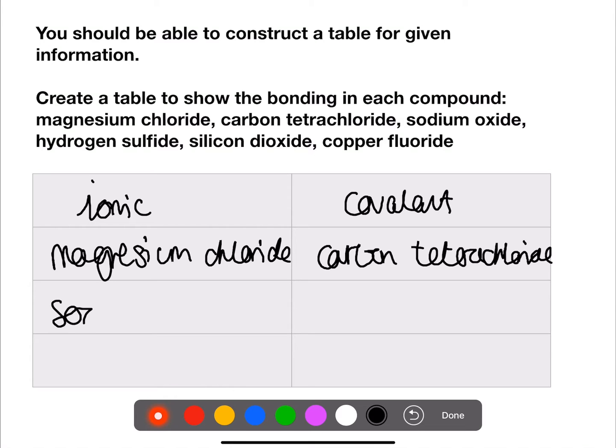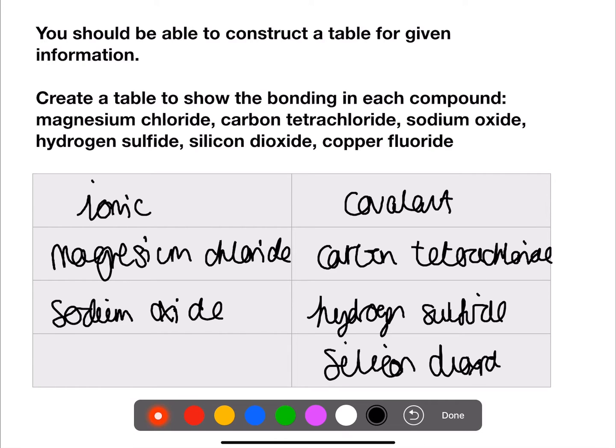Hydrogen sulfide is covalent, silicon dioxide is also covalent, and copper fluoride is ionic.